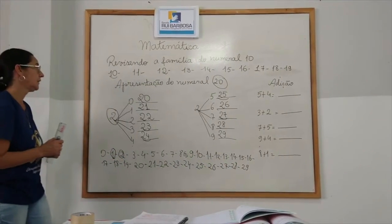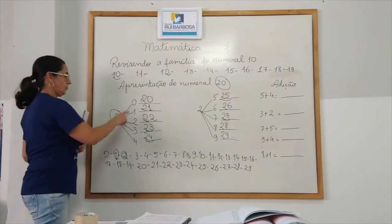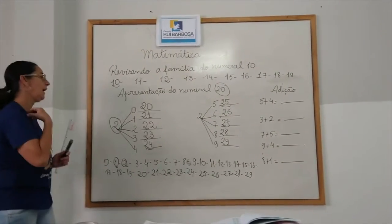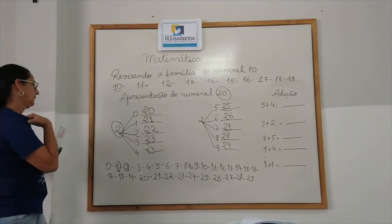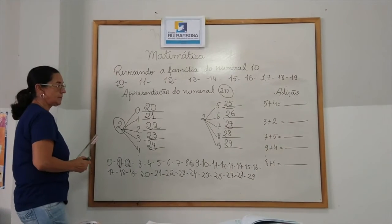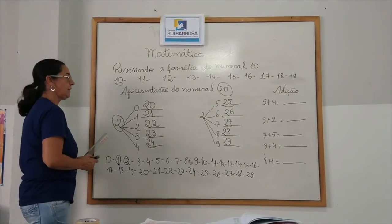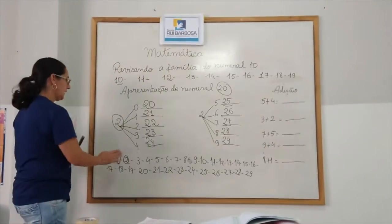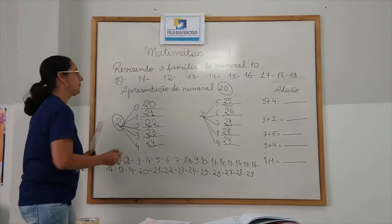Então veja que interação. Nós começamos com o numeral 0 e começamos a formar a família, juntando a unidade com a dezembro. Da mesma forma que na família do 10, eles têm a casinha da unidade com a dezena, a família do 20 também.